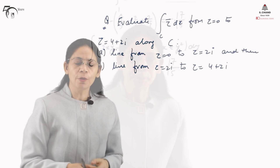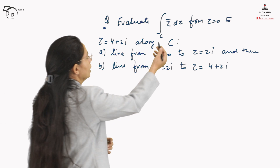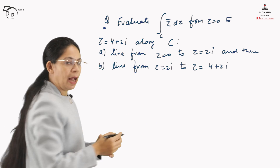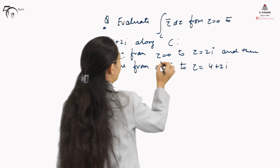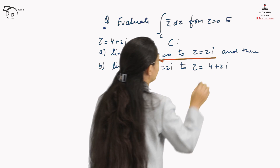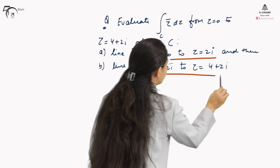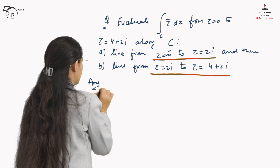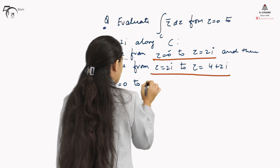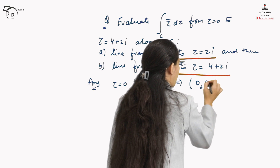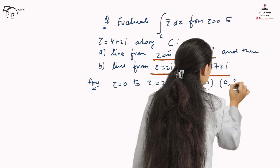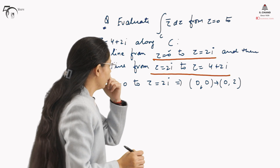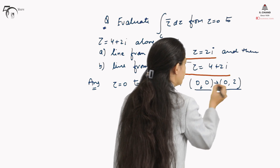We can take one more example. We will evaluate ∫z̄ dz from z = 0 to z = 4 + 2i along C, where we follow the path: first the line from z = 0 to z = 2i, then the line from z = 2i to z = 4 + 2i. The line from z = 0 to z = 2i means going from point (0, 0) to (0, 2), since the real part is 0 and the imaginary part is 2.